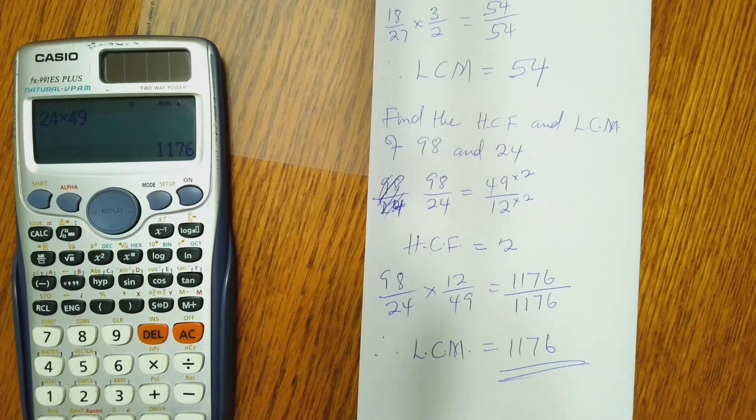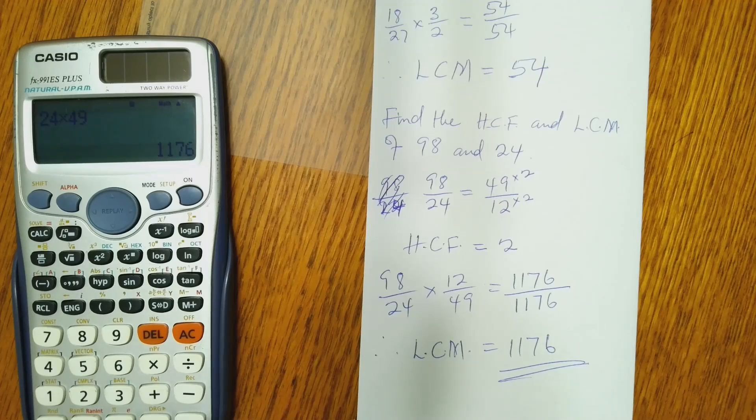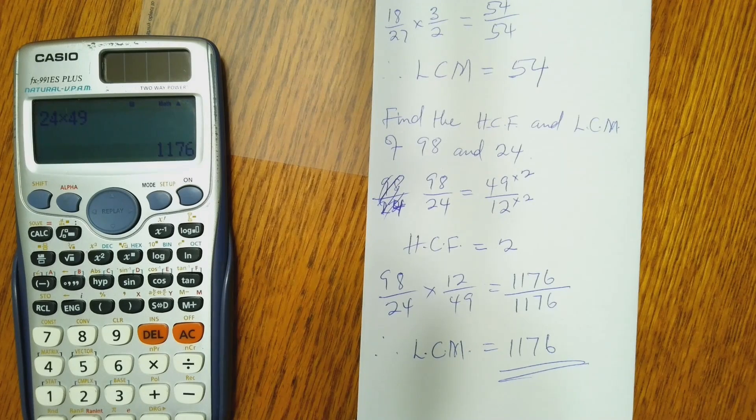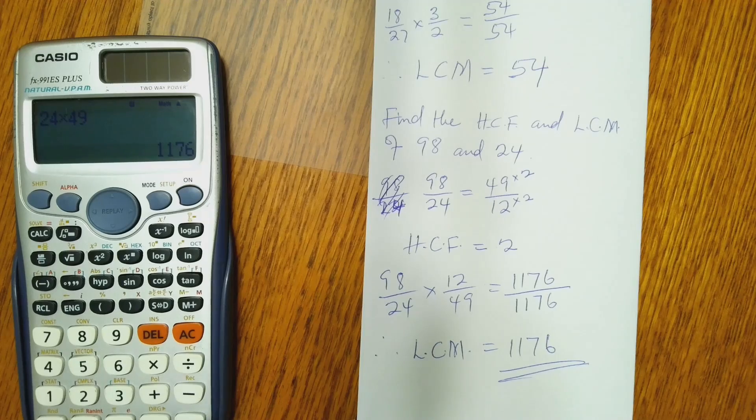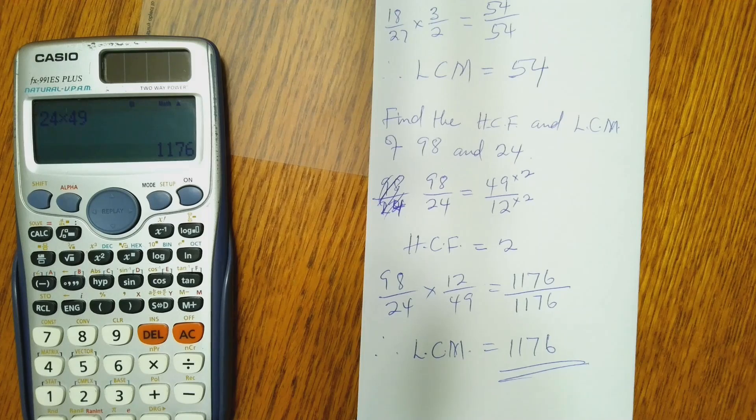So this is the way you can use Casio FX 991 ES Plus to find the HCF and LCM of 2 or more numbers. If the numbers are more than 2, you just have to do 2 of them at a time. And you don't need to list all the factors or multiples before you select which one is the highest. And I believe this saves you some time.